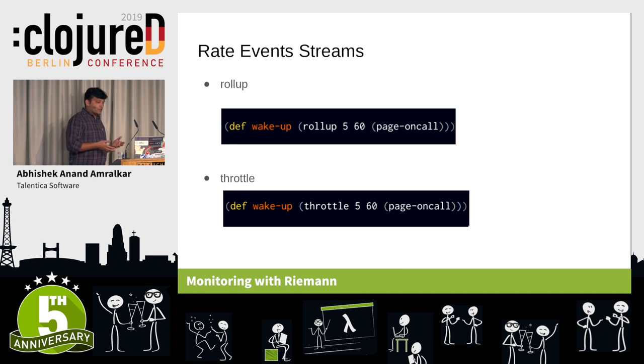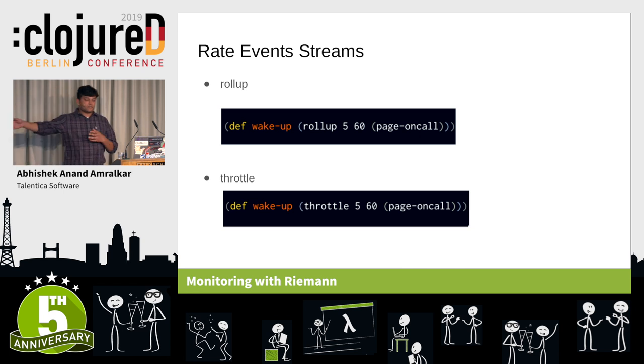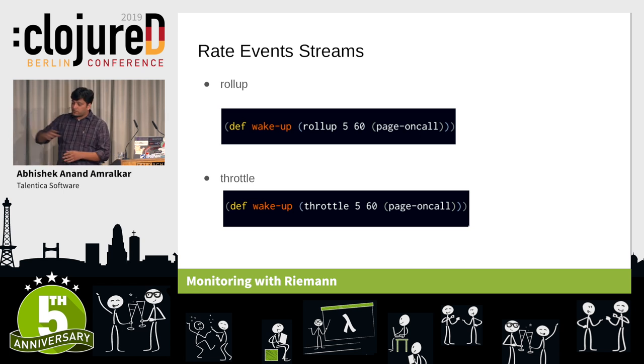We prefer throttle, because throttle sends five alerts in the first 60 seconds and then ignores the rest of the alerts for the remainder of that period.